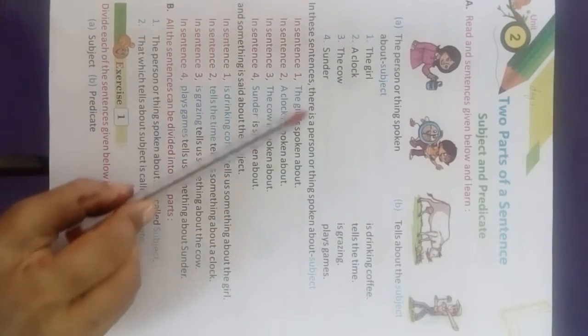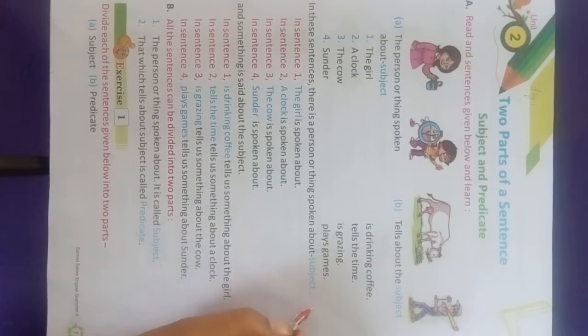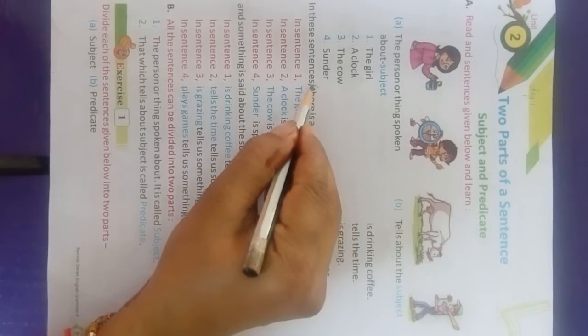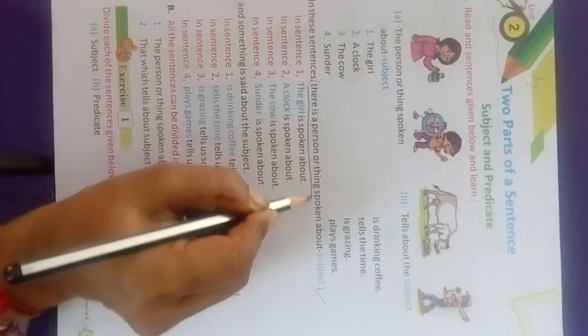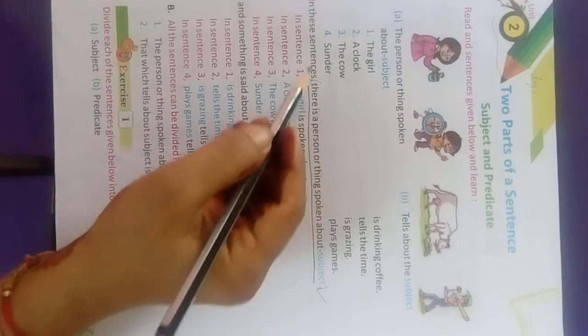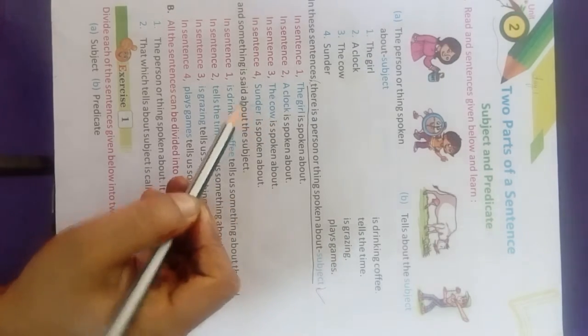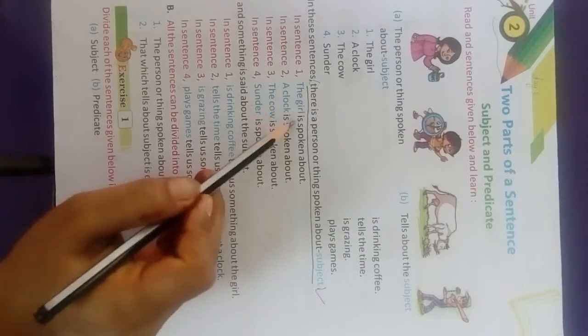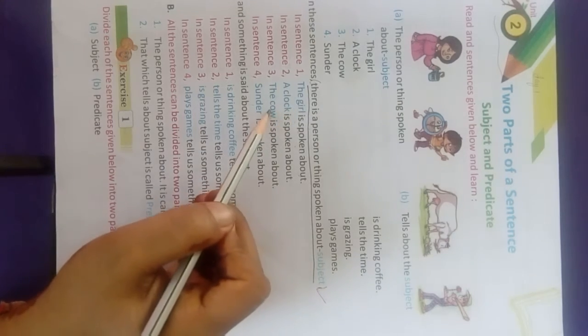The person or thing spoken about is known as the subject. For example: 'the girl,' 'the cow' — these are subjects. Whatever we are talking about is the subject, and what we say about it is the predicate.